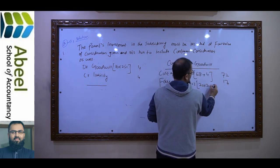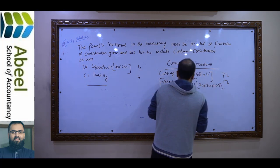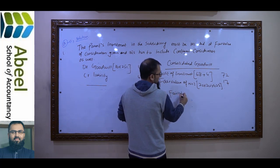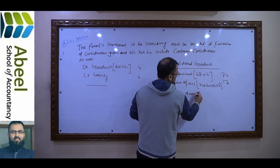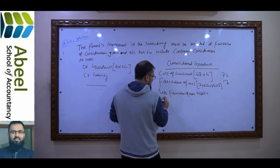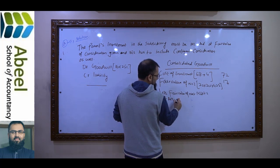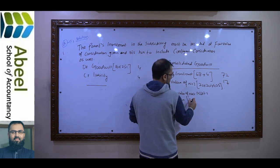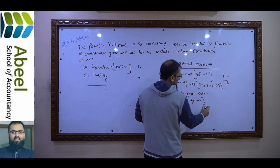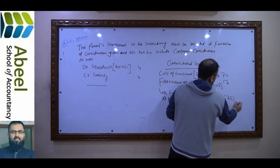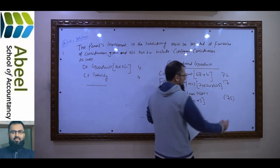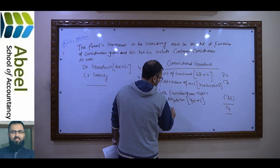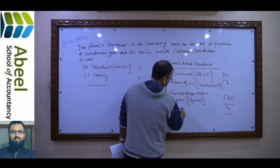20% into 4.25. Simply less than fair value of net assets at acquisition — including fair value adjustment. You already have net assets of 70, plus 5 of fair value adjustment, which comes to 75. So net everything off and inshallah your goodwill will come out. This is your consolidated goodwill.